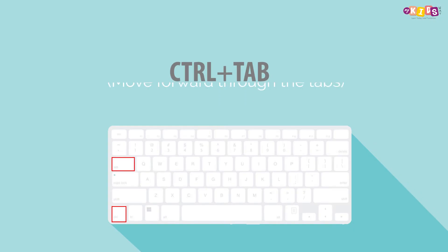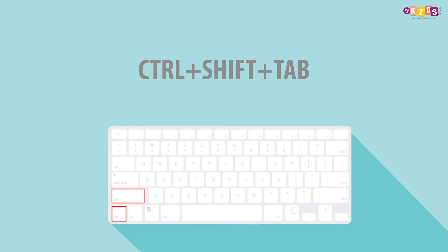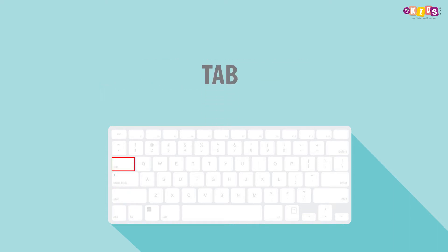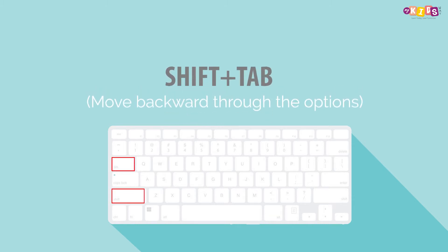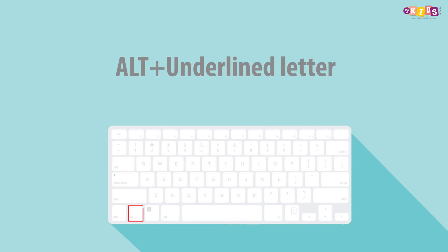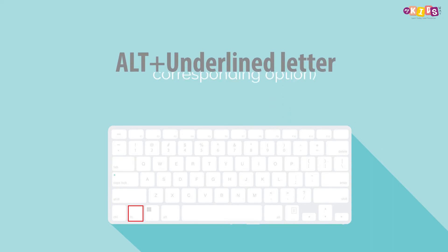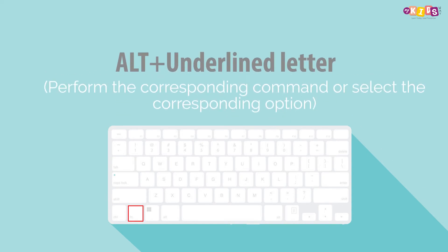Ctrl plus Tab: move forward through the tabs. Ctrl plus Shift plus Tab: move backward through the tabs. Tab: move forward through the options. Shift plus Tab: move backward through the options. Alt plus underline letter: perform the corresponding command or select the corresponding option.